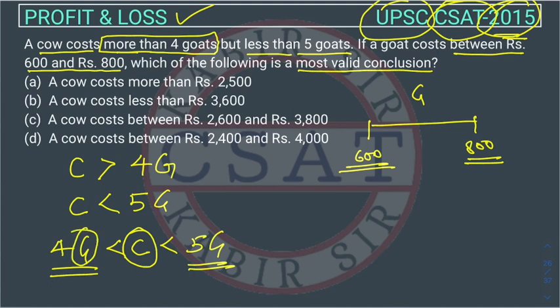Suppose all four goats are priced at 600, then four goats cost 2400. Since no goat can be priced below 600, the cow price will always be more than 2400 — this is the minimum price of goat scenario.